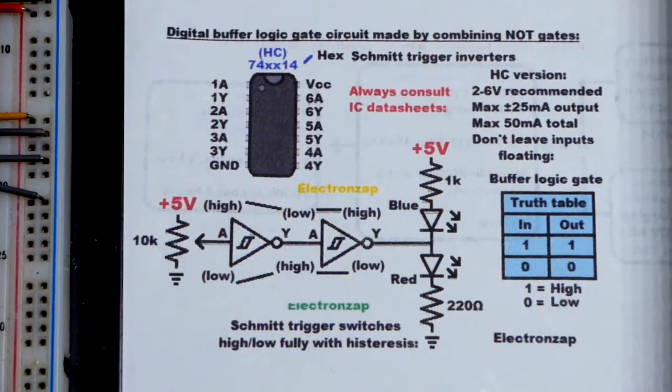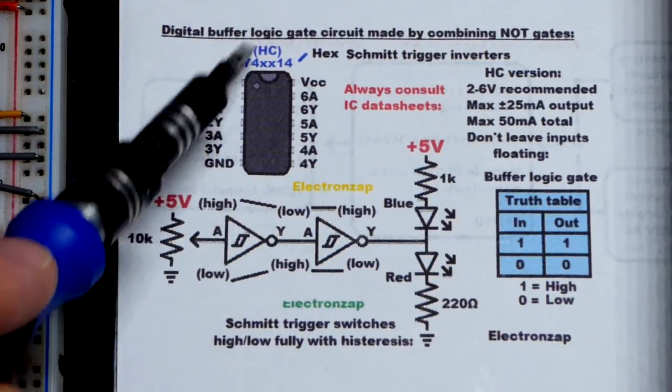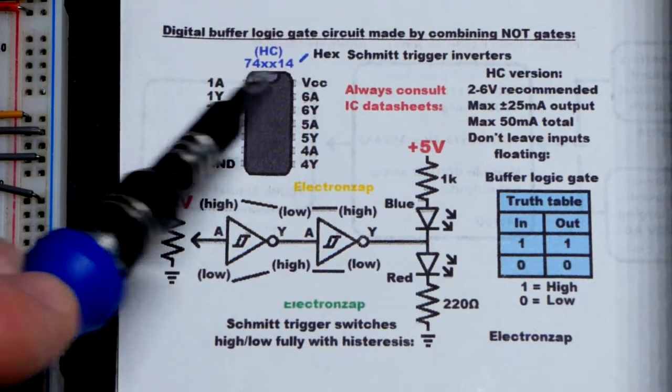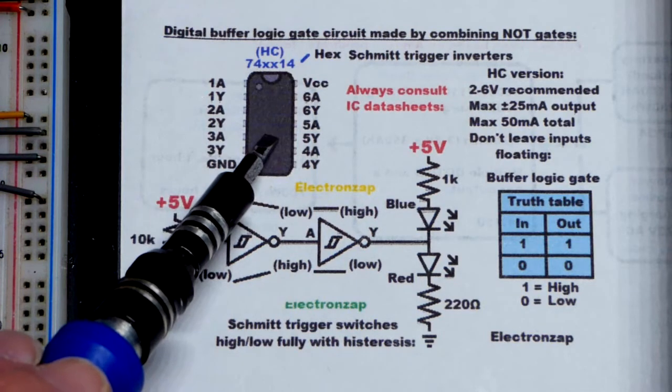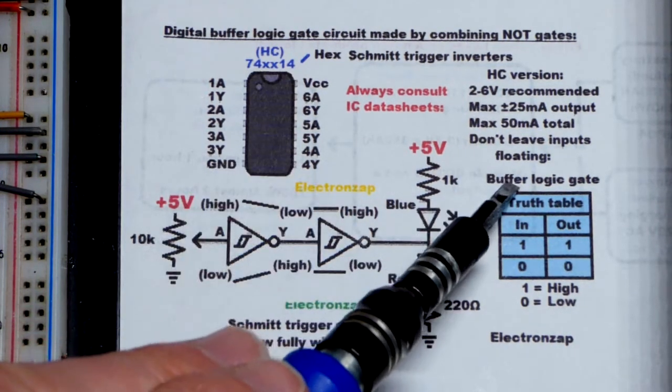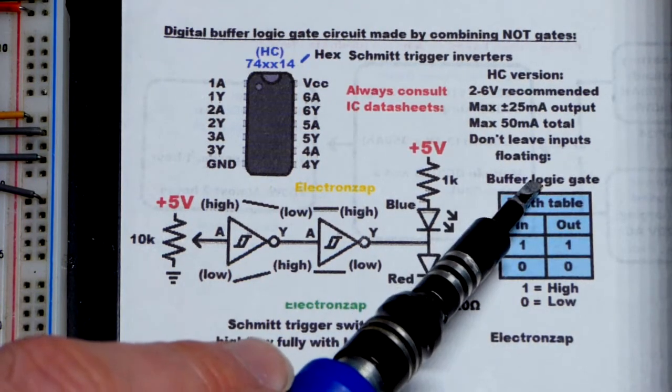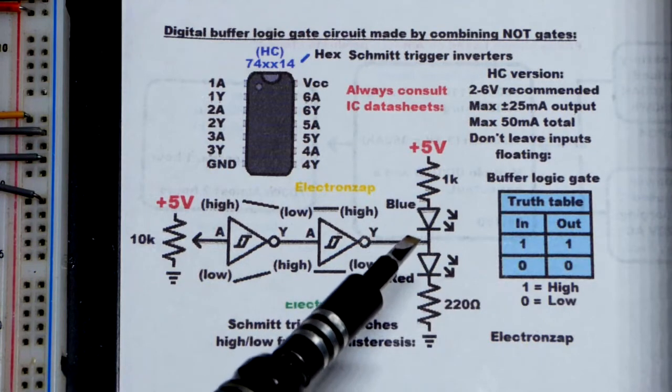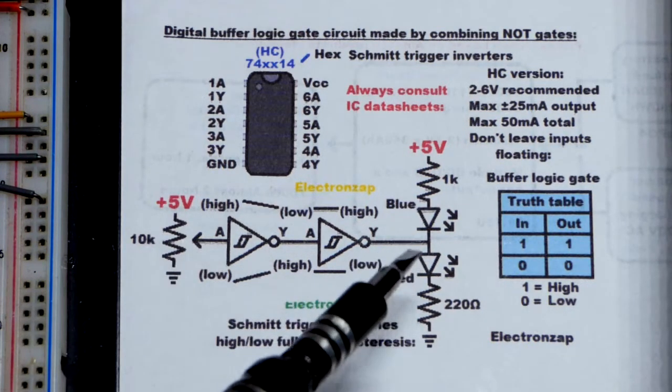Here is a close-up of the diagram. As I said, I'm using the 74HC version 14, so 7414, but it's a high-speed CMOS version integrated circuit. It's NOT gates, but this is not a NOT gate circuit that we're interested in—it's a buffer logic gate.